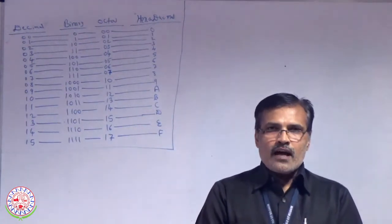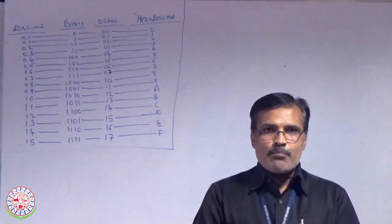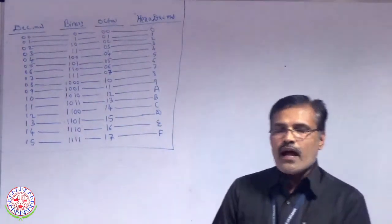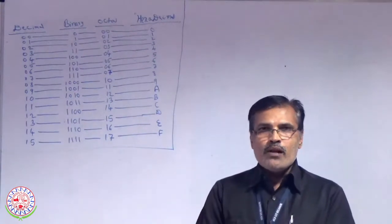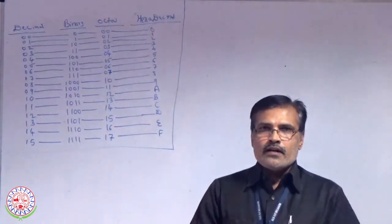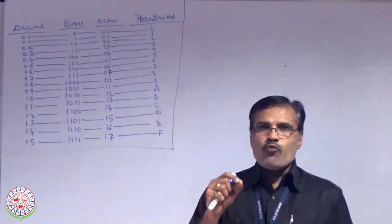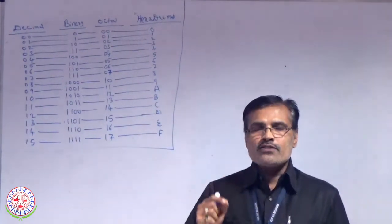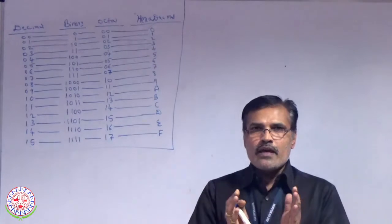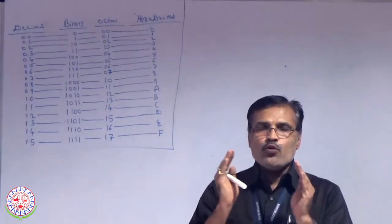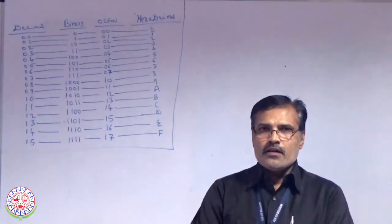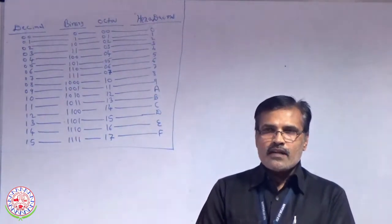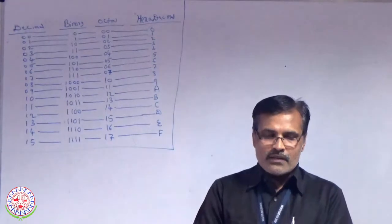Let us start with data representation. In this entire data representation and binary arithmetic topic, you will be getting almost 6 to 8 one-mark questions and almost 1 to 2 two-mark questions, making up a total of 8 to 12 marks in the PGCET question paper.